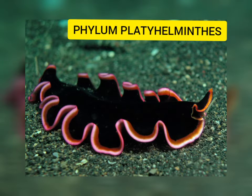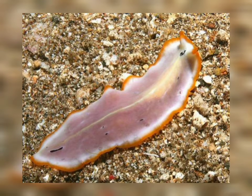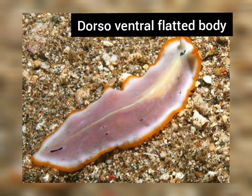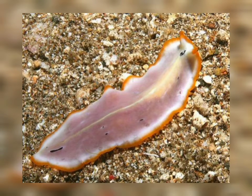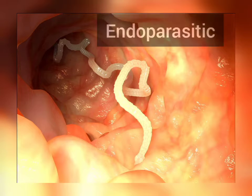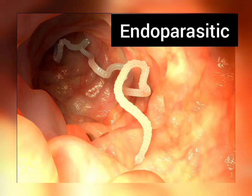Hello friends, welcome back to another video. In this video we are going to deal with the topic phylum Platyhelminthes. Platyhelminthes are dorsoventrally flattened body, hence are called flatworms. They are mostly endoparasitic, found in animals including human beings.